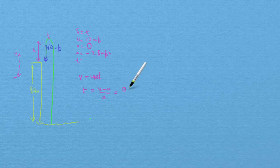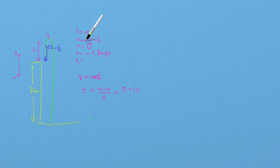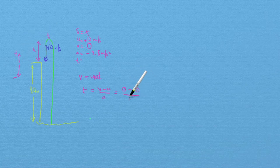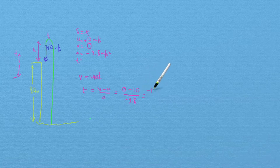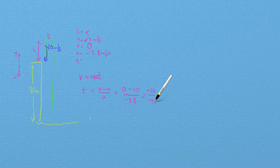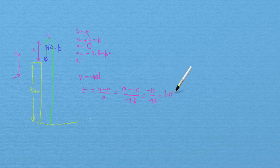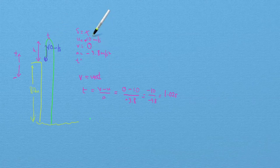So this is going to be 0 minus 10, and I forgot to mention that this 10 is plus. Let's just explicitly state that because it's going upwards and I've chosen upwards as my positive coordinate. And I'm going to divide that by minus 9.8. So I'm going to get minus 10 over minus 9.8 for the time, which would make sense because minus divided by minus would give me a positive number and time will have to be positive. So the time taken will be 1.02 seconds. So that's how long it takes for the ball to get from the bottom up to the peak.